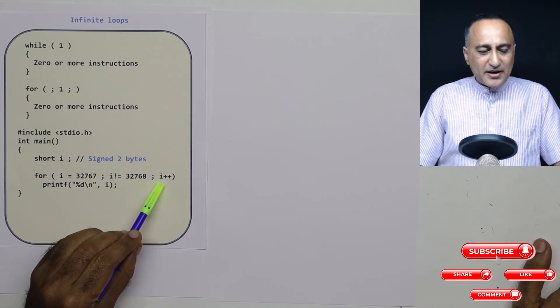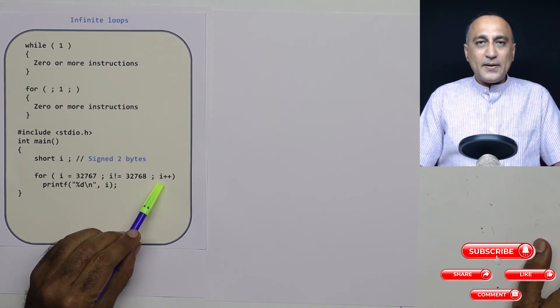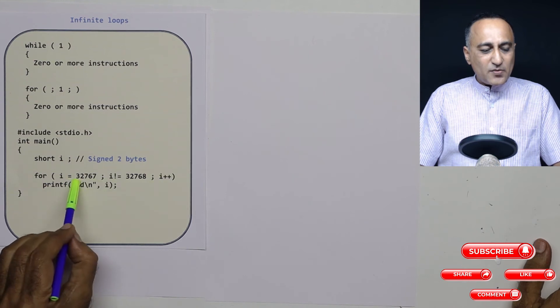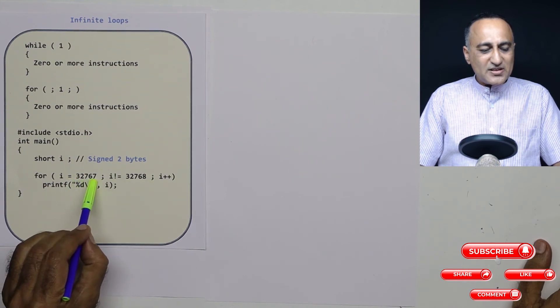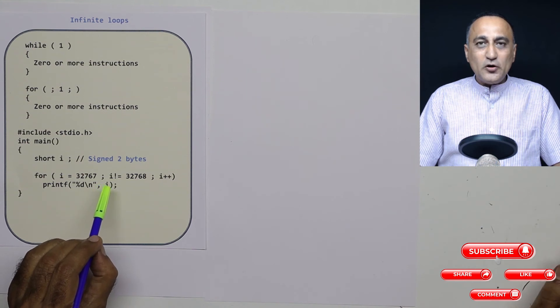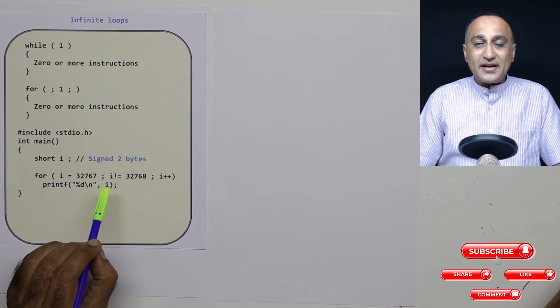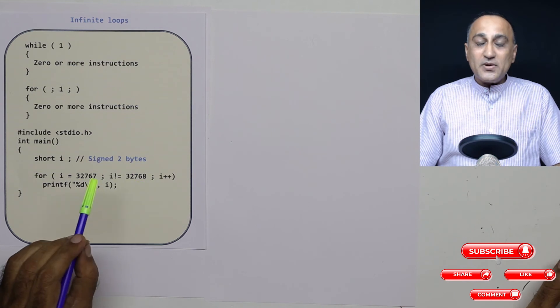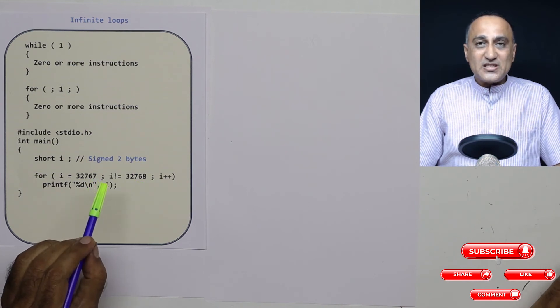Now next step is I am trying to increase the value of i by one. But when I try to increase the value of i by one 32,767, since it has reached its positive limit, it is going to increase and go to the negative side. So i will now be equal to minus 32,768.